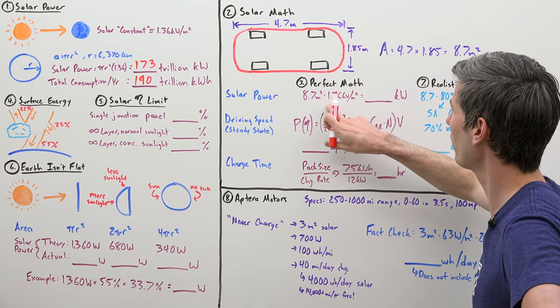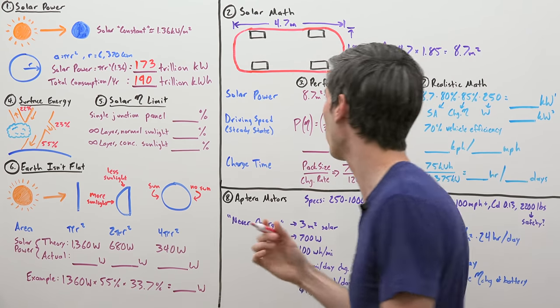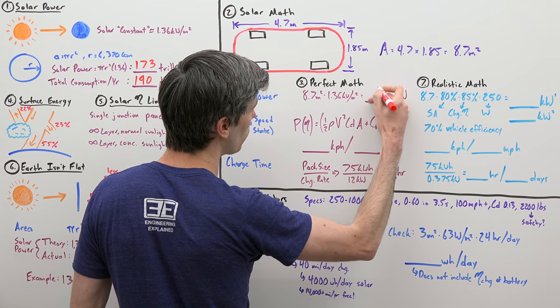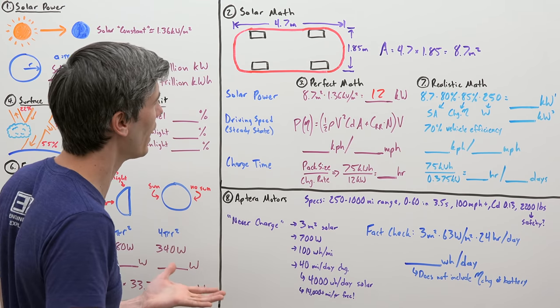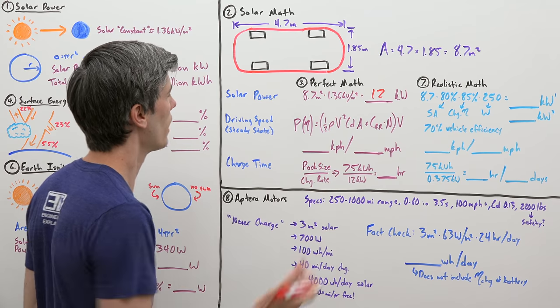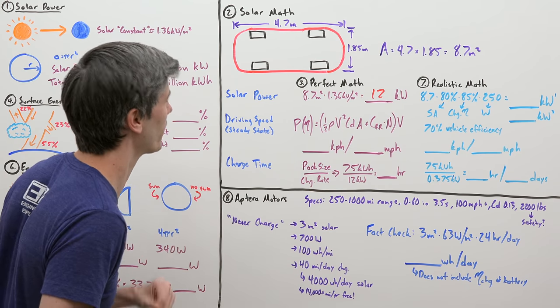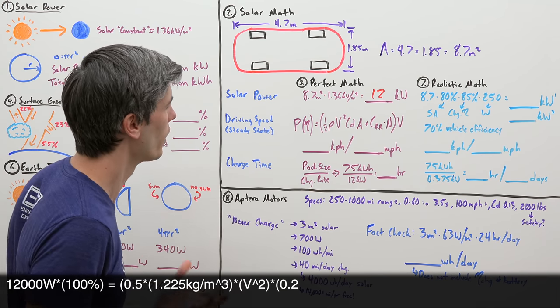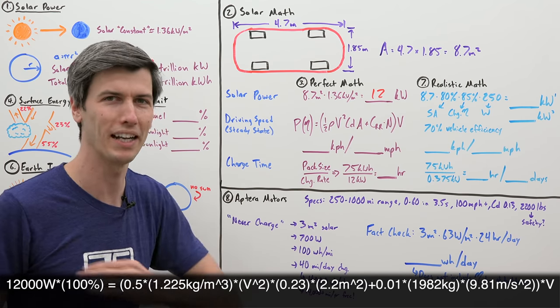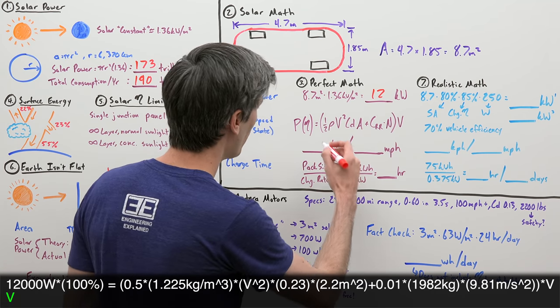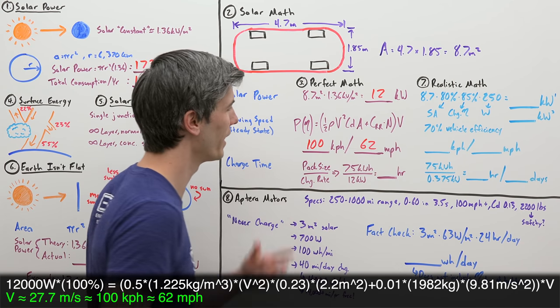And so if we take that 8.7 meter surface area, and we multiply it by our solar constant, 1.36, well, in a perfect world, we could get about 12 kilowatts of power hitting that Tesla, about 16 horsepower. Now, a question that I had is, if you had 12 kilowatts of constant power, how fast could you potentially drive indefinitely, assuming the sun is shining on your car? So you can do the math for that and figure out the actual speed with those 12 kilowatts of power.